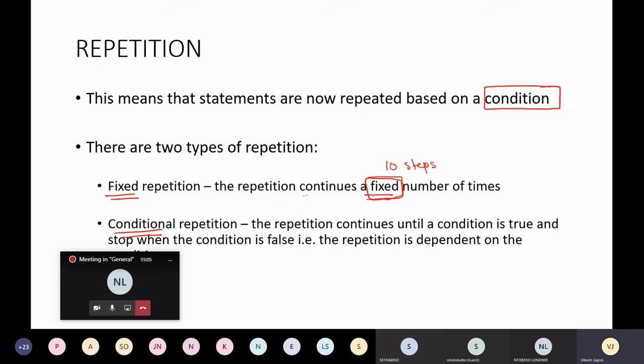Take 10 steps, keep repeating the steps 10 times and you will get to the wall. Conditional repetition—let's assume you are baking a cake. While baking a cake you need to mix the flour.